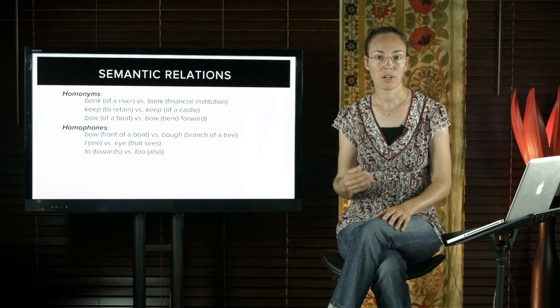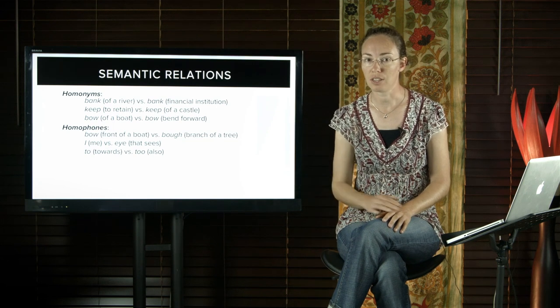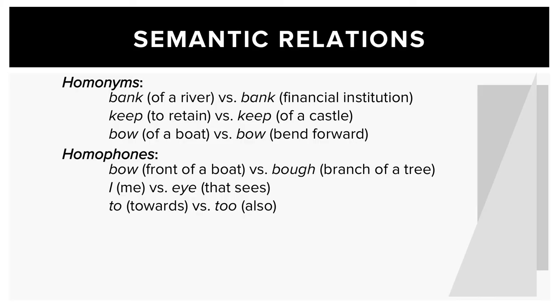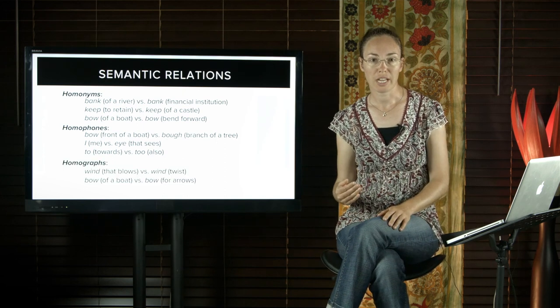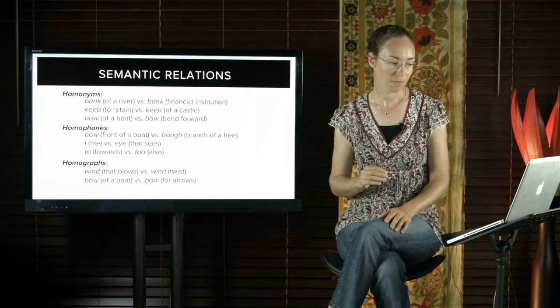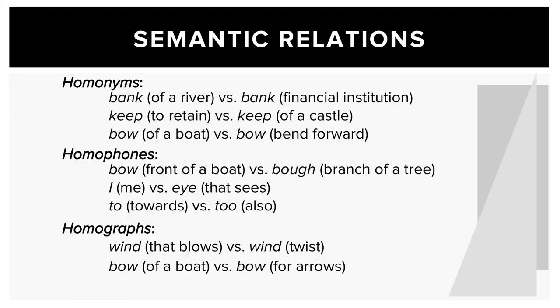Homophones are homonyms that are pronounced the same regardless of how they're written. So you can have bow of a boat and bough the branch of a tree, but they're spelt differently. We can say I meaning myself versus eye as in the part of you that sees, to meaning towards or too meaning also. Homographs are homonyms that are written the same way regardless of whether they're pronounced the same. So you can have wind that blows and wind meaning to twist. You can have the bow of a boat versus a bow for arrows.